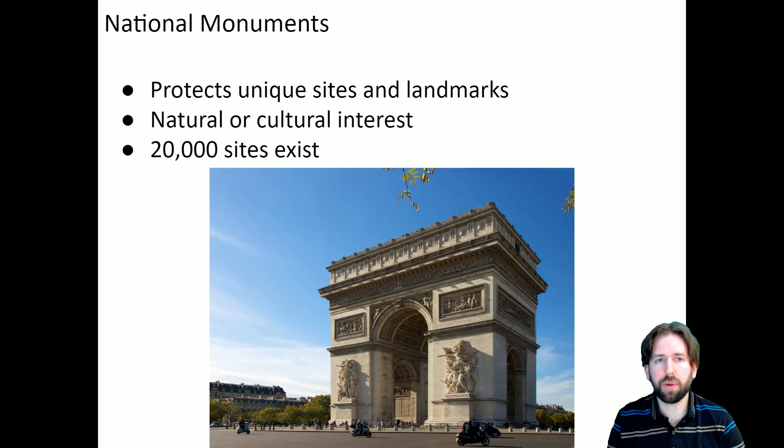Lastly, of the international public lands, we have national monuments. These are sites that protect unique sites and landmarks, and they can be of natural or cultural interest — or they could be something historical, like the arches that you see in the picture. There are 20,000 plus national monument sites that exist worldwide.